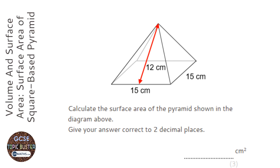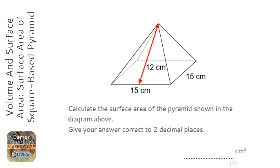We're asked to find the surface area of this pyramid. Surface area is like wrapping paper — what area of wrapping paper would we need? This shape is made up of four equal triangles, because it's a square-based pyramid, so all the triangles are going to be equal, and we've got a square at the bottom.